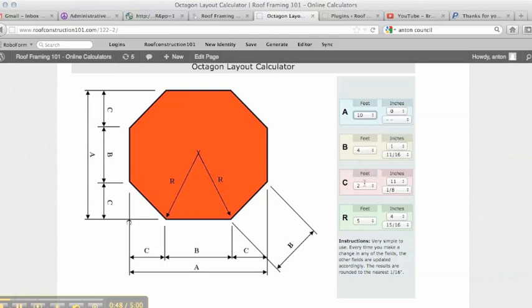And then if you notice, B, C, and R automatically have dimensions already logged in. And that is 4 foot 1 and 11 sixteenths is what the length of side or the face of the wall is going to be.